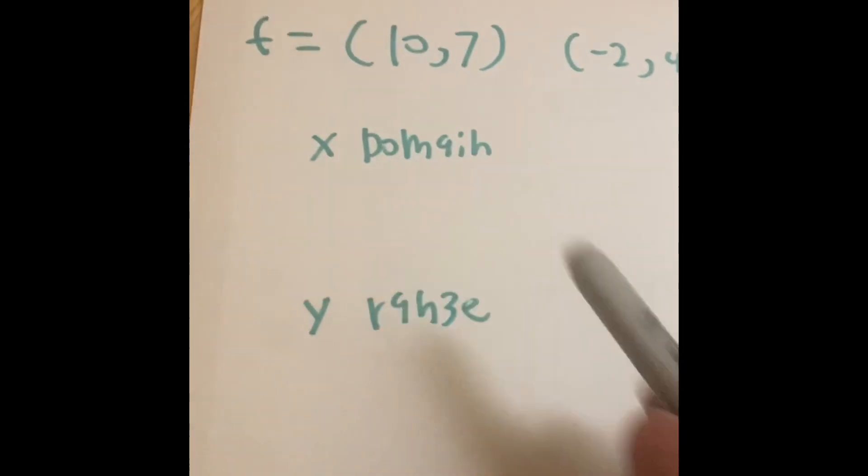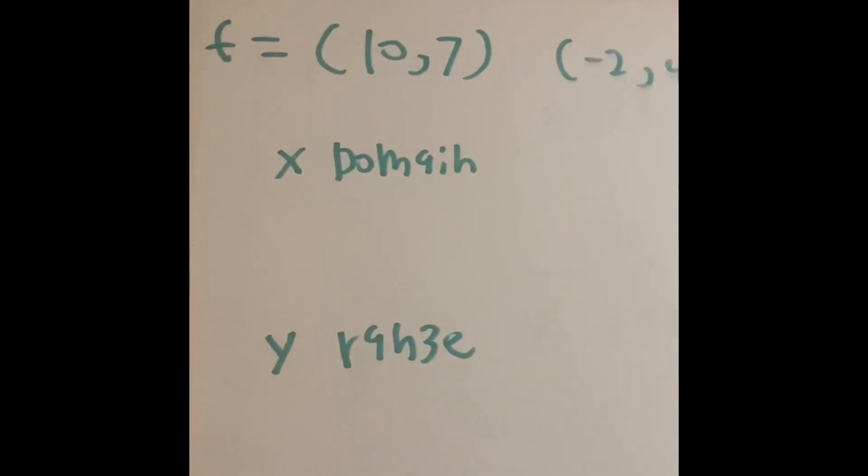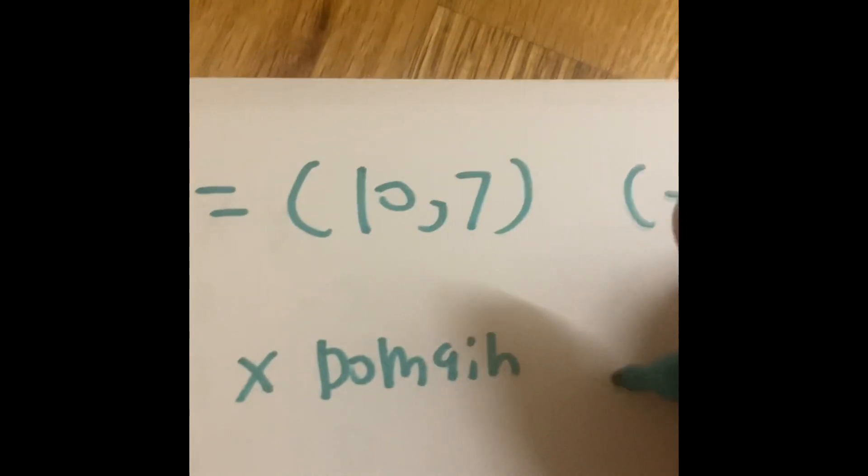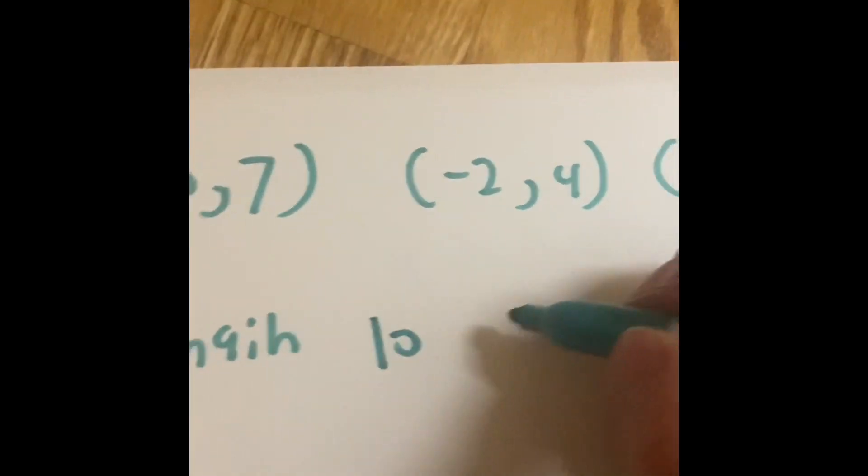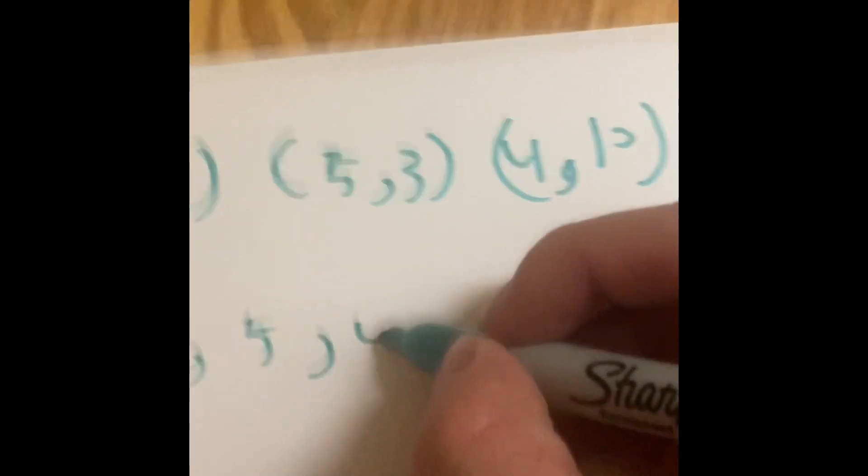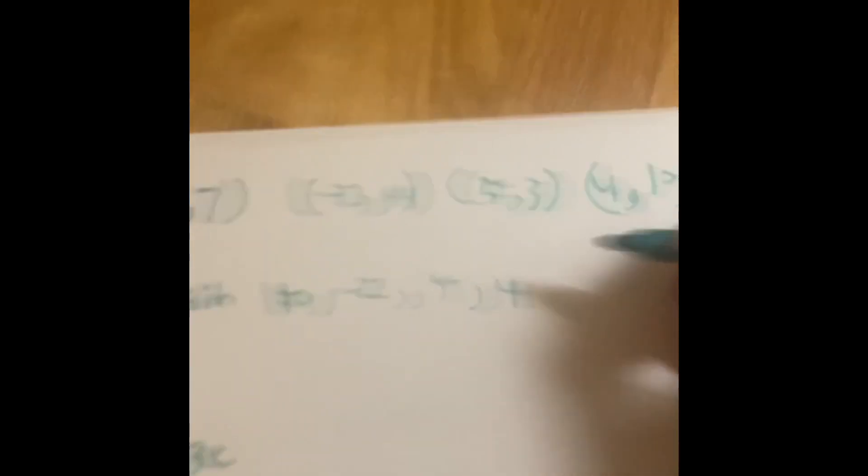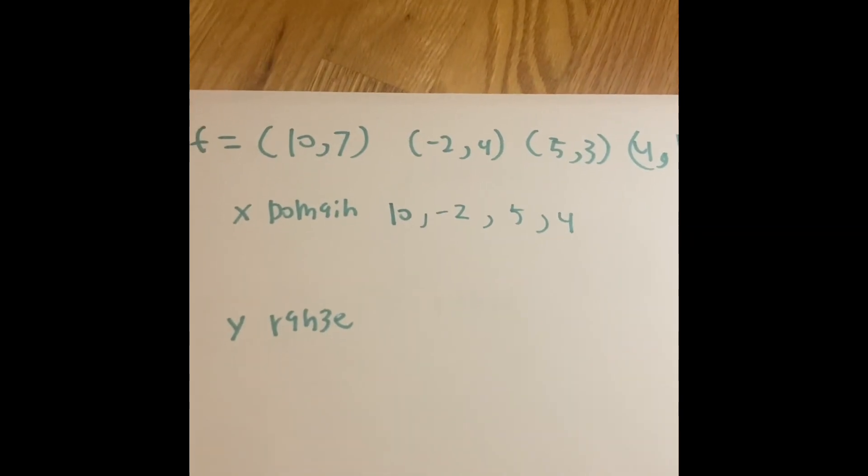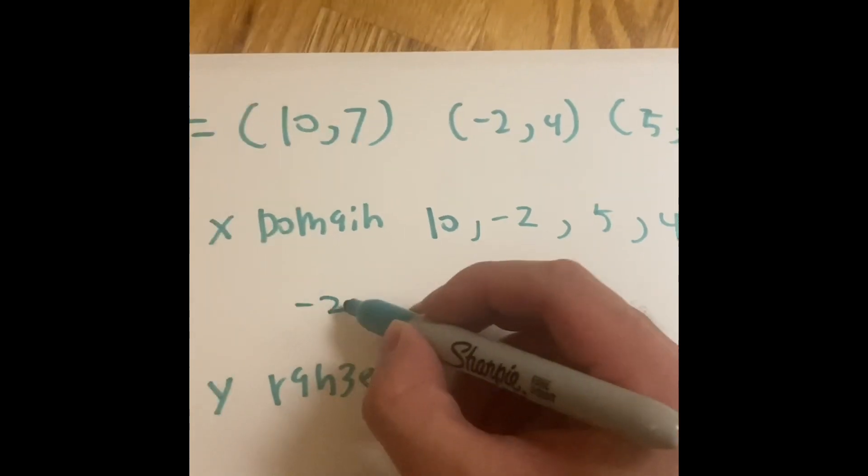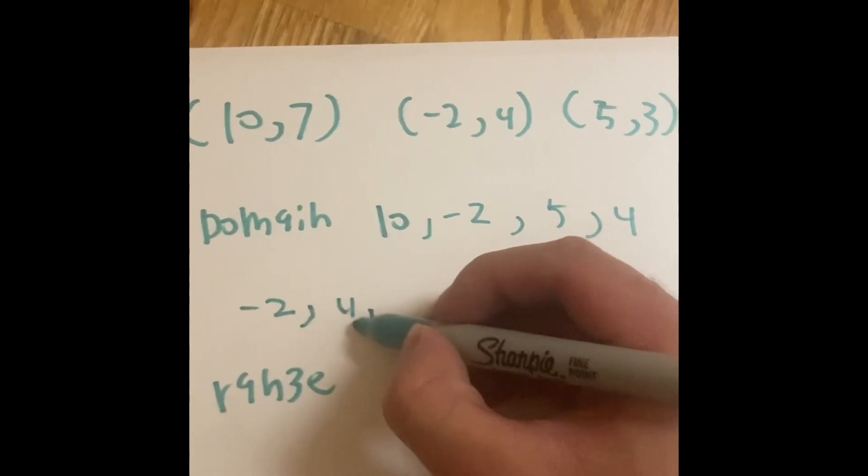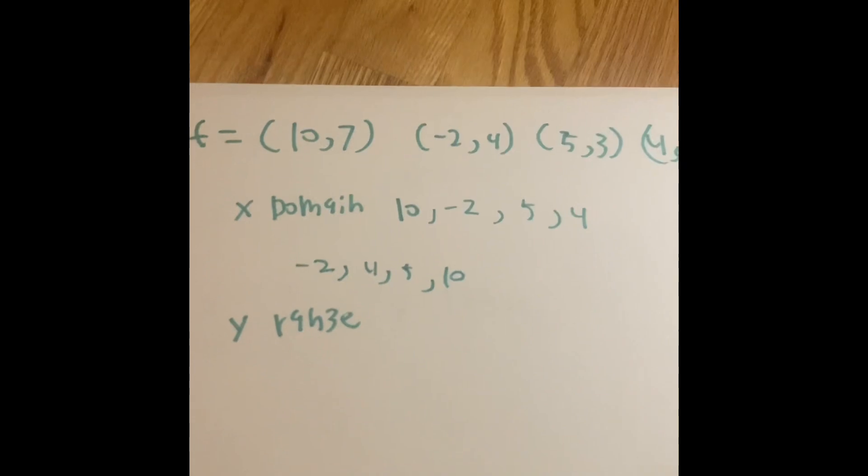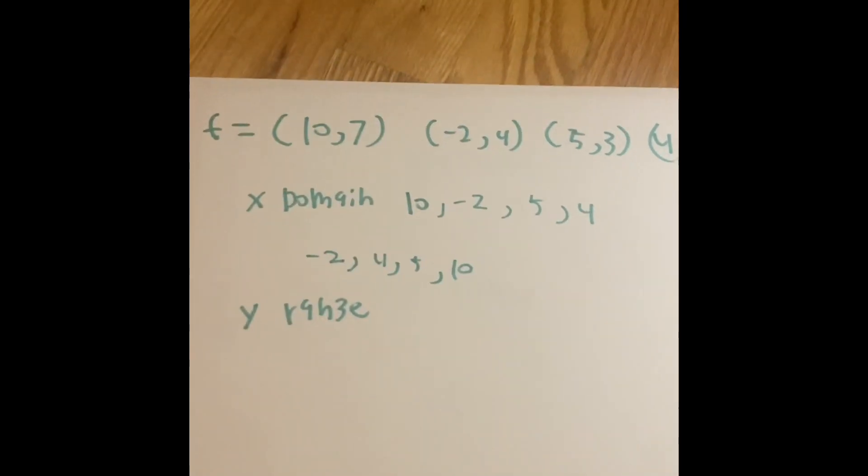Let's look at the domain, because many mathematicians like to do x before y. So for the domain, we have 10, I'll put them on that list, negative 2, 5, and 4. If your teacher wants it in a numerical order, you would say negative 2, because that's the least, 4, 5, and 10. So least to greatest. That's if your math teacher really wants you to do that.